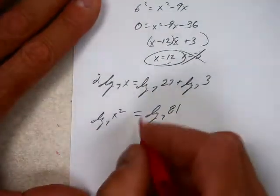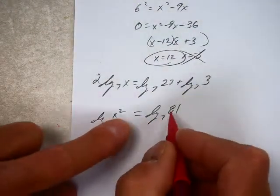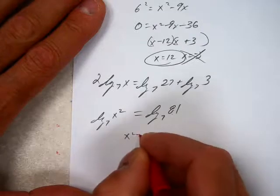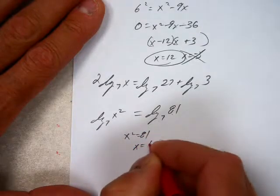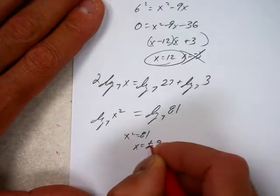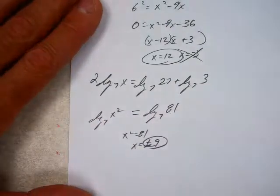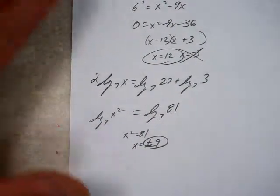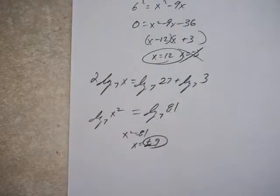So now I can just rewrite it. I can say, wait, I've got the same base, so these two must be the same. x squared equals 81, x equals plus or minus 9, and the negative won't work, so it's just positive 9. So I'm just using a bit of that other property along with it.